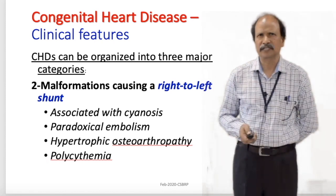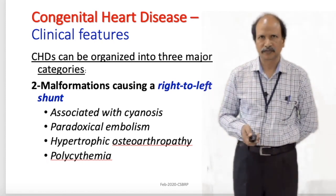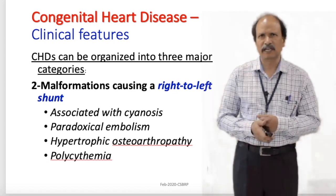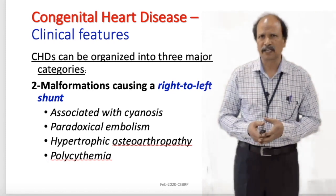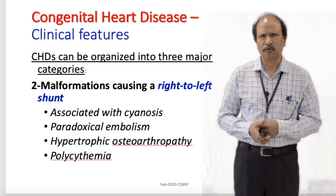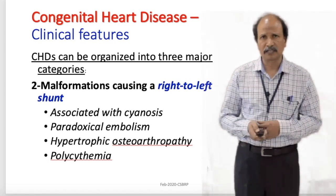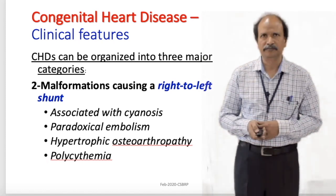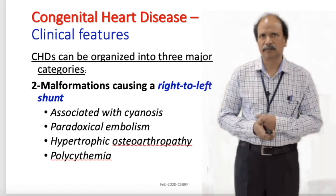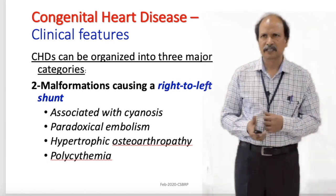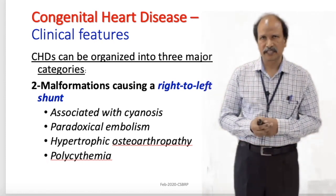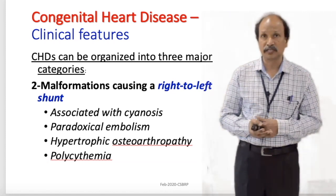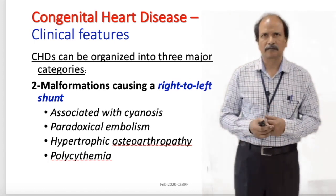Malformations causing right to left shunts are usually associated with cyanosis from birth. Because deoxygenated blood circulates in the body, patients develop hypertrophic osteoarthropathy — clubbing involving almost all digits, thickening of bone and skin. They may also develop polycythemia. Another important clinical implication is paradoxical embolism, where a thrombus from the venous system enters systemic circulation instead of pulmonary circulation through an opening in the atrial or interventricular septum.